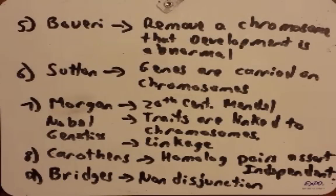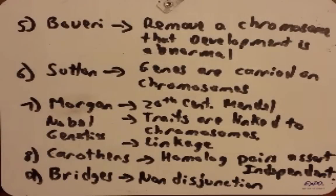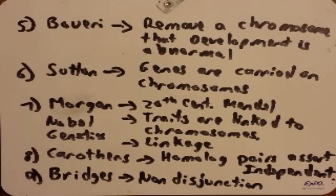That's all I have for this podcast. In this podcast we talked about how we linked meiosis with Mendel's findings, and then we talked about the chromosome theory of inheritance and the nine scientists that played a pivotal role in establishing the principles of that chromosome theory of inheritance. If you have any questions, please let me know. If not, I'll see you in class. Bye.